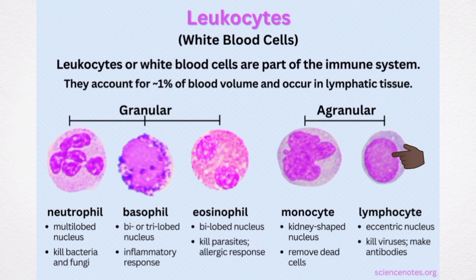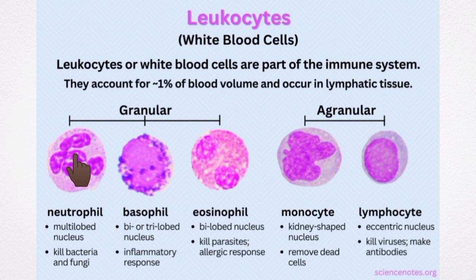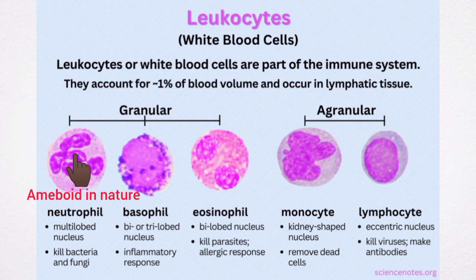Now let's look at the morphology of white blood cells. Neutrophils are also known as polymorphs. They have fine or small granules in the cytoplasm and are nucleated. The nucleus is multi-lobed in nature. The number of lobes depends upon the age of the cell — in younger cells the nucleus is non-lobed, and in older neutrophils the nucleus has about two to five lobes. The diameter of the cell is between 10 to 12 microns. The neutrophils are amoeboid in nature.